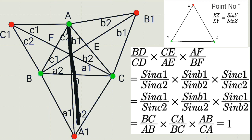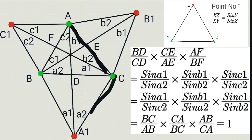For angle pair B1 and A2, using point one for triangle ACA1, sine(B1) by sine(A2) equals AC divided by CA1, that is AC divided by BC.